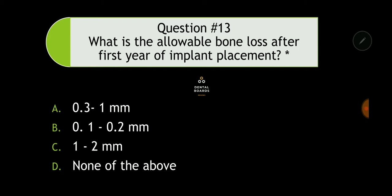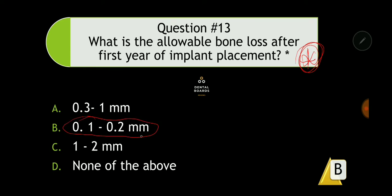Question 13: What is the allowable bone loss after the first year of implant placement? A patient may ask whether they are going to lose some bone around the implant. You should be able to answer that. The allowable bone loss in the first year is 0.1 to 2 millimeters.